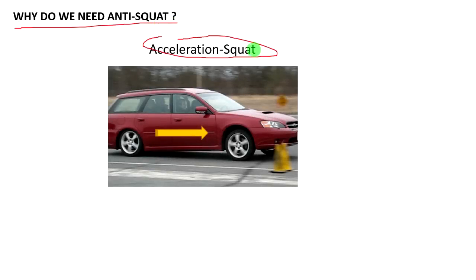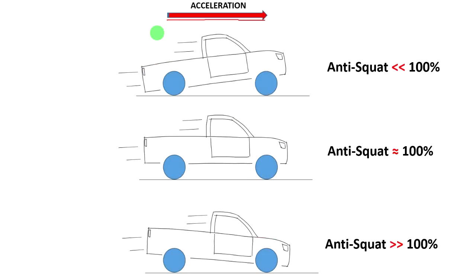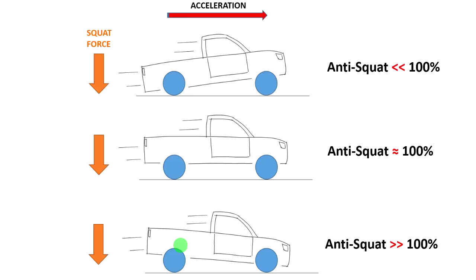To understand why we need anti-squat, we need to understand the acceleration squat. In a car, when you accelerate, the weight transfers backwards, causing the rear suspension to squat. Here we have three cars doing the same acceleration: the first has very low anti-squat so it squats during acceleration; the second has 100% anti-squat so nothing happens.